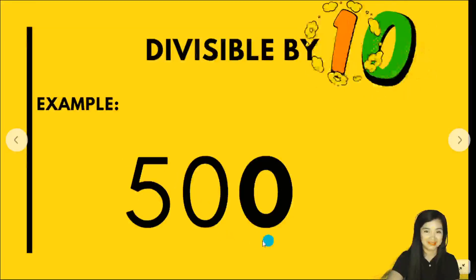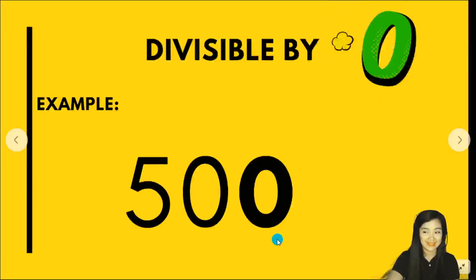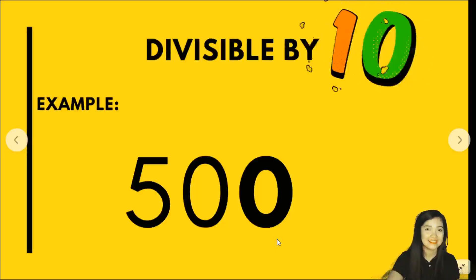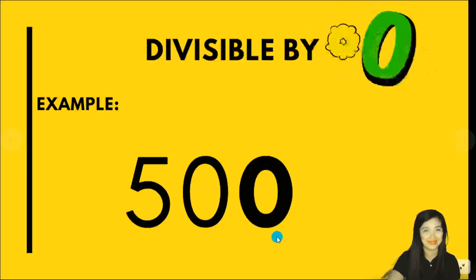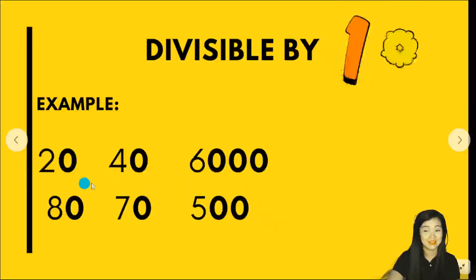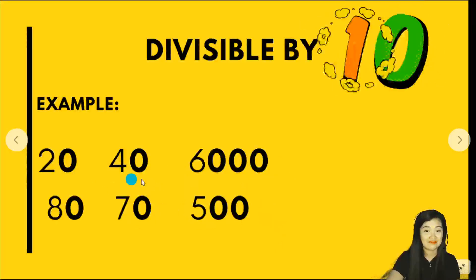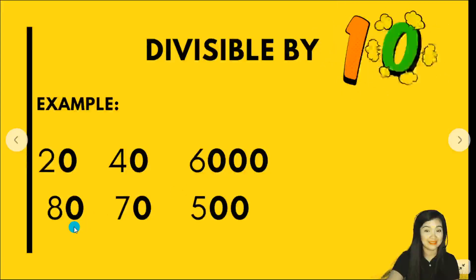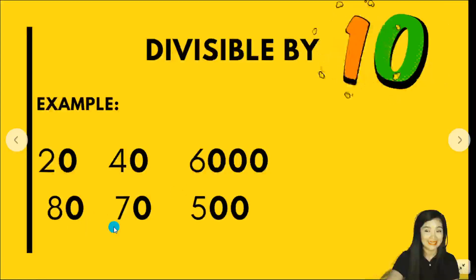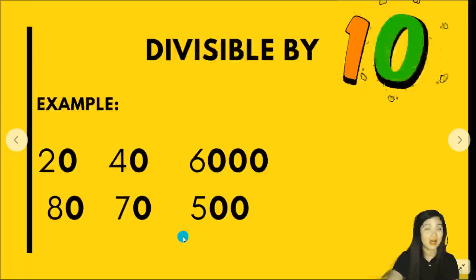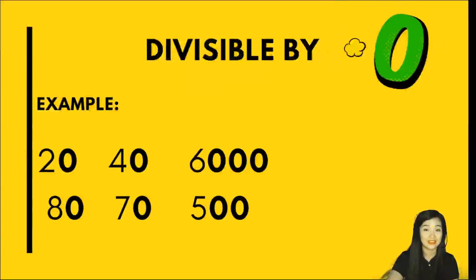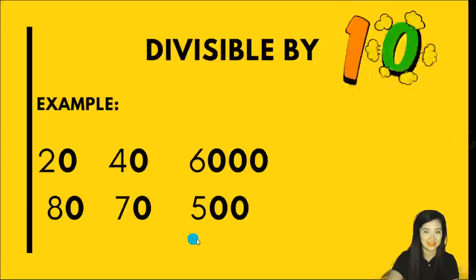500 — the 1's digit is 0. Therefore, it is divisible by 10. Numbers 20, 40, 6,000, 80, 70, and 500 are all divisible by 10 because the 1's digit is 0.